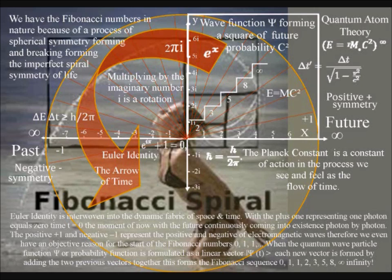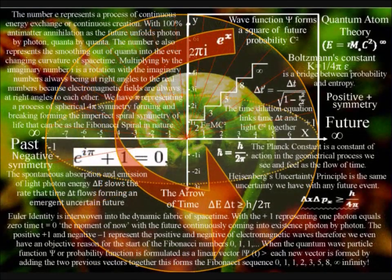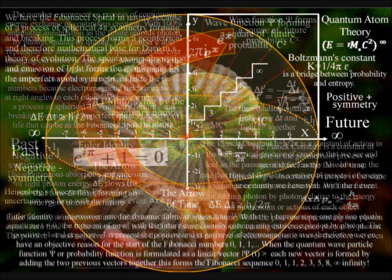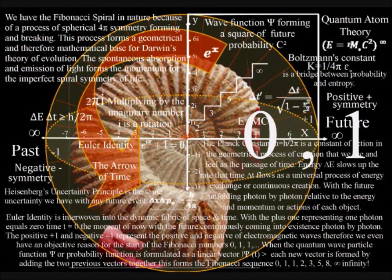When the quantum wave particle function, or probability function, is reformulated as a linear vector, each new vector is formed by adding the two previous vectors together. This forms the Fibonacci sequence.